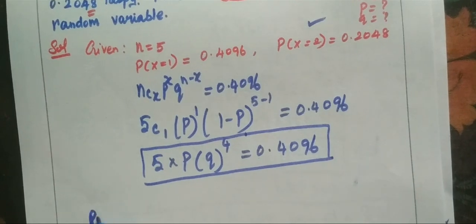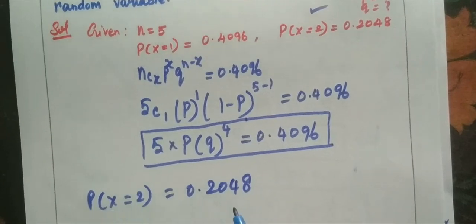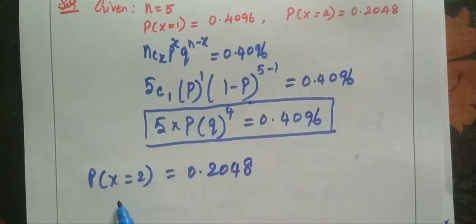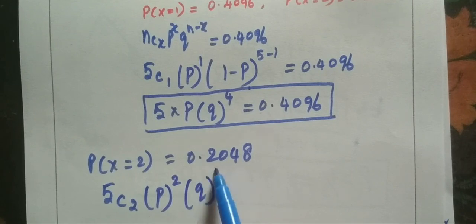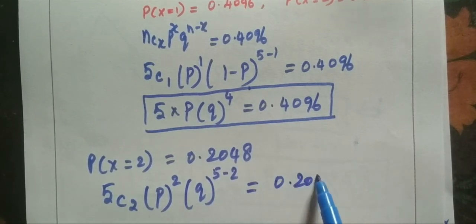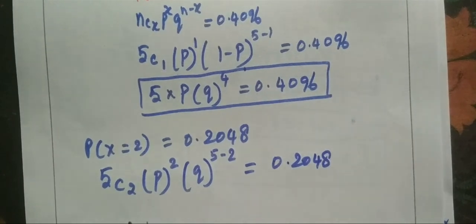Next value, we have x equals 2, which equals 0.2048. This is the formula: nCx times p power x times q power n minus x equals 0.2048.